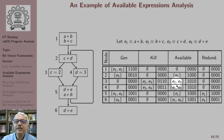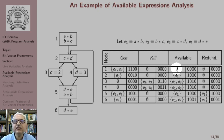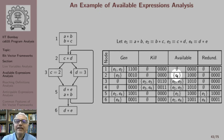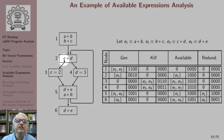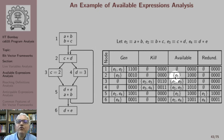We have shown here the expected result of available expressions analysis and we would like to perform our analysis to get this result. At the start of the program, no expression is available because all variables are assumed to be local, so no expression has been computed before. At the entry of basic block 2, expression a*b is available along this path and also along the looping path because neither a nor b has been modified. However, b*c is not available along the looping path because c has been modified, so only e1 is available at the start of basic block 2.